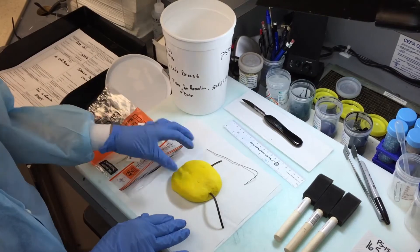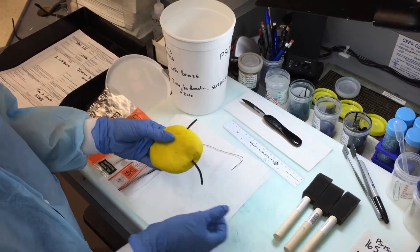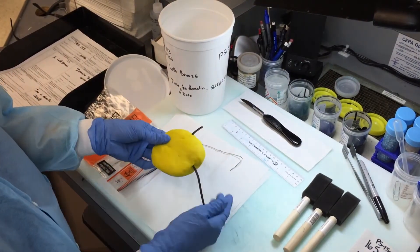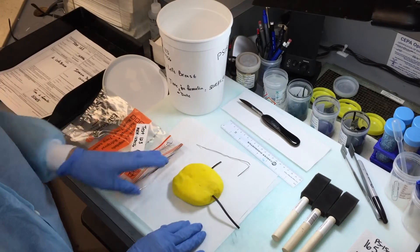So we have three sutures. We have the short, which designates the superior aspect, the long designates the lateral aspect, and the double for deep. And this is a left breast, so this is the correct orientation.